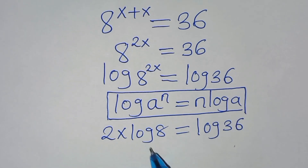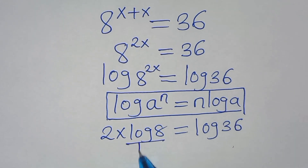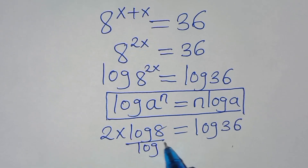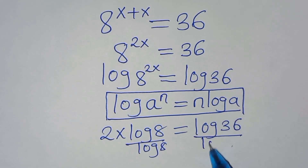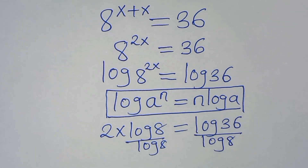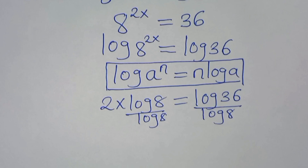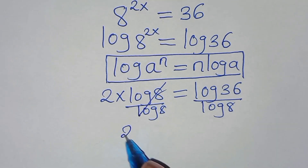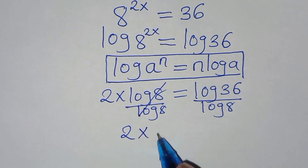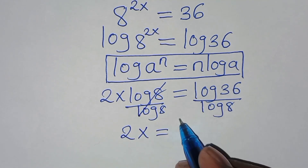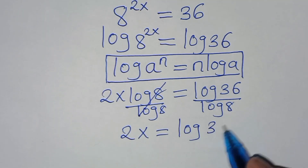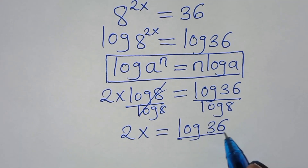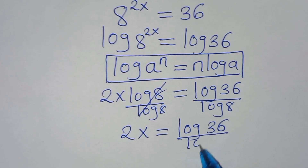Let's divide both sides by log 8, so simplifying, we now have 2x equals log 36 divided by log 8.